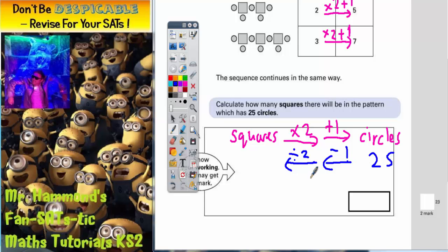So 25 subtract 1 is 24, and 24 divided by 2 is 12. And now we've got back to the fact that there would be 12 squares. So that's your answer, 12.